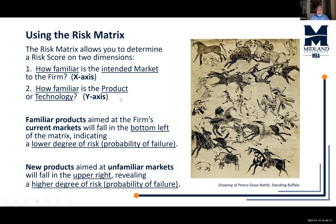Market is the x-axis; product or technology is the y-axis. Familiar products that are similar to our current markets fall in the bottom left-hand portion of the matrix, reflecting a lower degree of risk — a lower probability of failure. Products that are not as familiar fall in the upper right corner, representing a higher degree of risk and therefore a higher probability of failure.